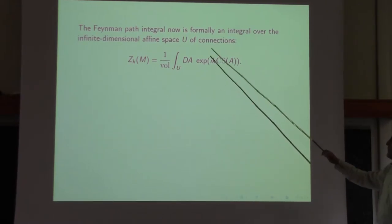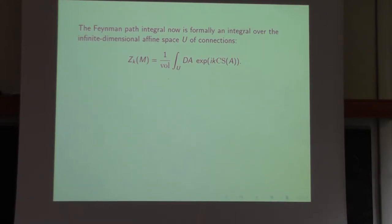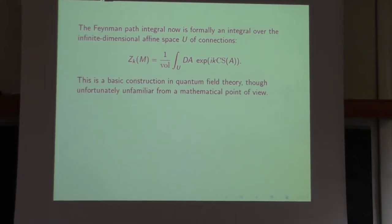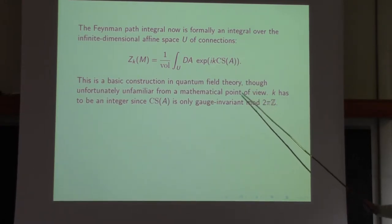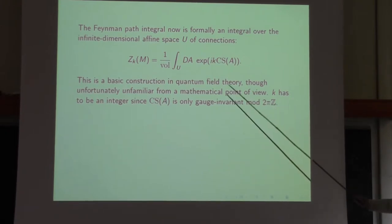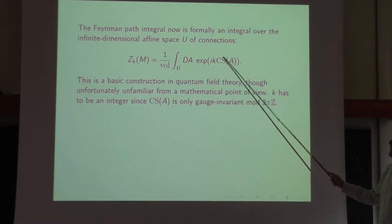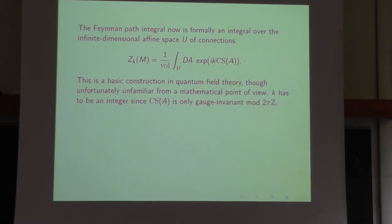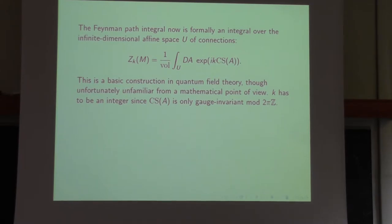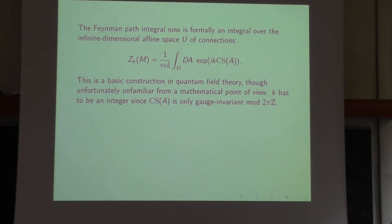The Chern-Simons function is only defined modulo 2π times an integer. Feynman and Dirac tell us that since we take the action multiplied by i, the action must be defined modulo 2π times an integer, which means k must be an integer. So what we define here is an invariant of a three-manifold that depends on an integer k. We might take k to be a positive integer because changing the sign of k is the same as reversing the orientation of M.